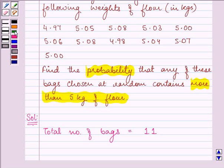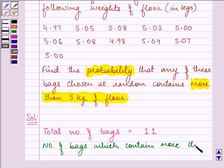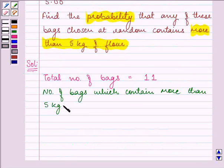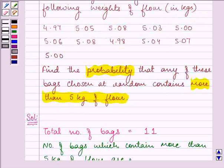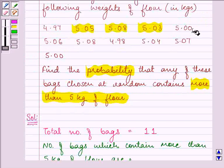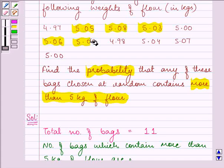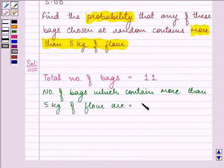Now, if we see the data that is given to us, the number of bags which contain more than 5 kg of flour are 1, 2, 3—it is equal to 5, so we will not count it—4, 5, 6, and 7. Again, 5 we will not be counting. So there are 7 bags which contain more than 5 kg of flour.